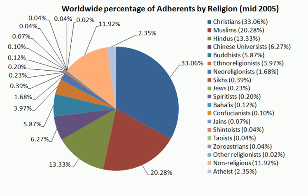Satya, truth as being, and rta, truth as law, are the primary principles of reality, and their manifestation is the background of the canons of dharma, or a life of righteousness. Satya is the principle of integration rooted in the absolute; rta is its application and function as the rule and order operating in the universe. Conformity with rta would enable progress whereas its violation would lead to punishment. Panikkar remarks that rta is the ultimate foundation of everything and the expression of the primordial dynamism that is inherent in everything.